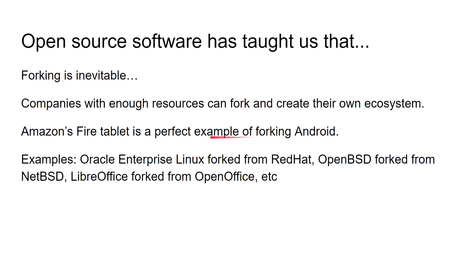We've seen this in the software world. Oracle Enterprise Linux is a fork of Red Hat. OpenBSD was actually a fork of NetBSD. LibreOffice is a fork of OpenOffice. And so on and so on — there are so many examples of this happening. So it is inevitable that RISC-V will fork at some point in the future.